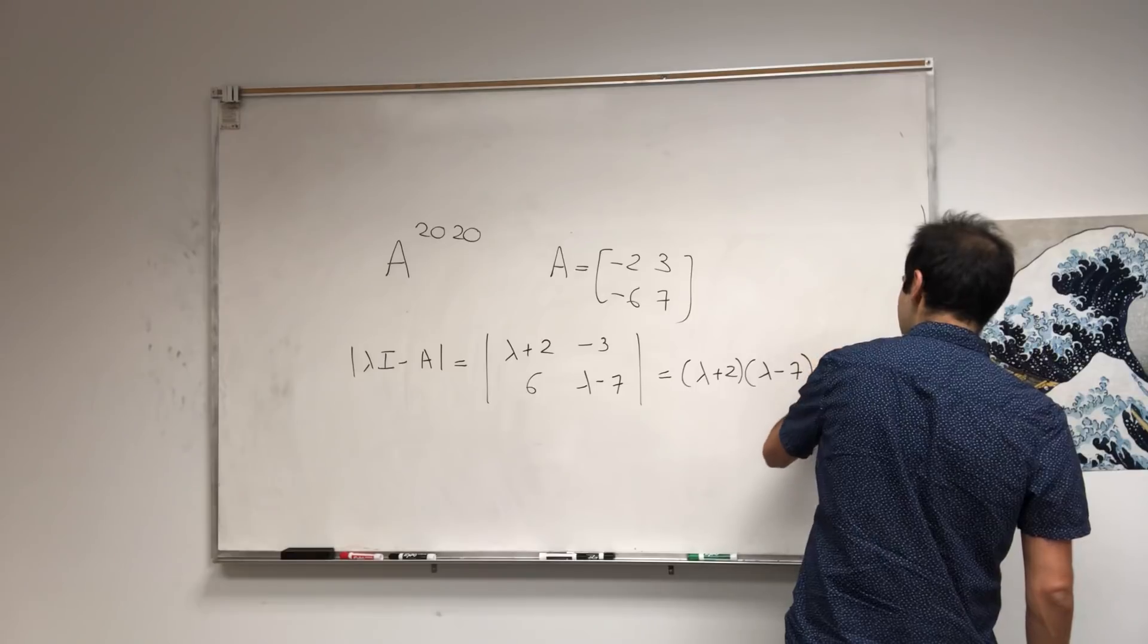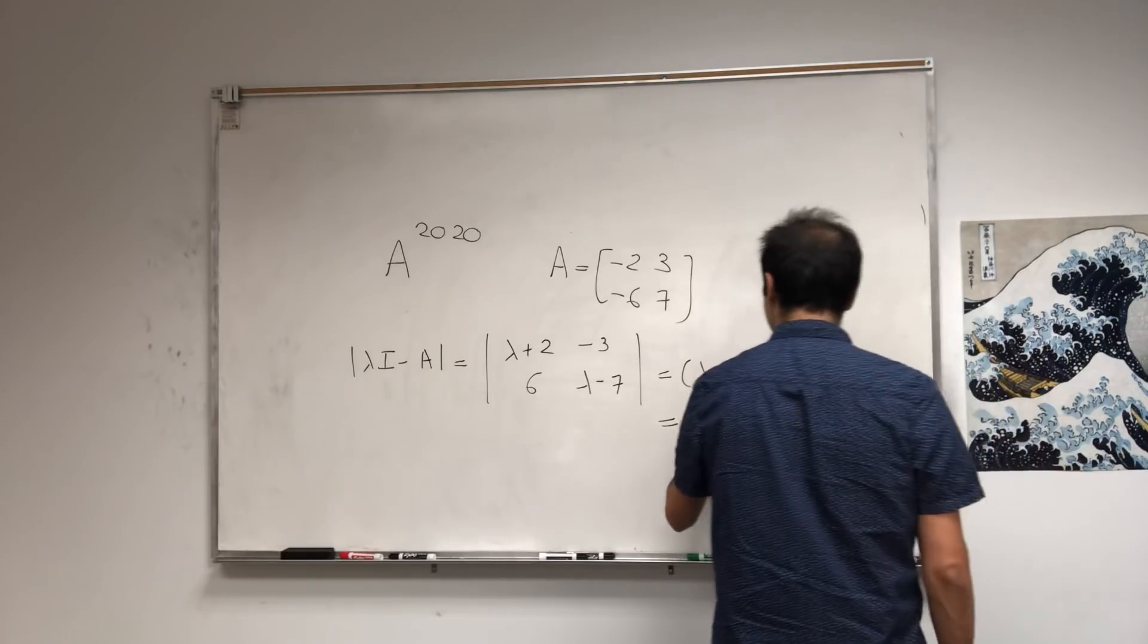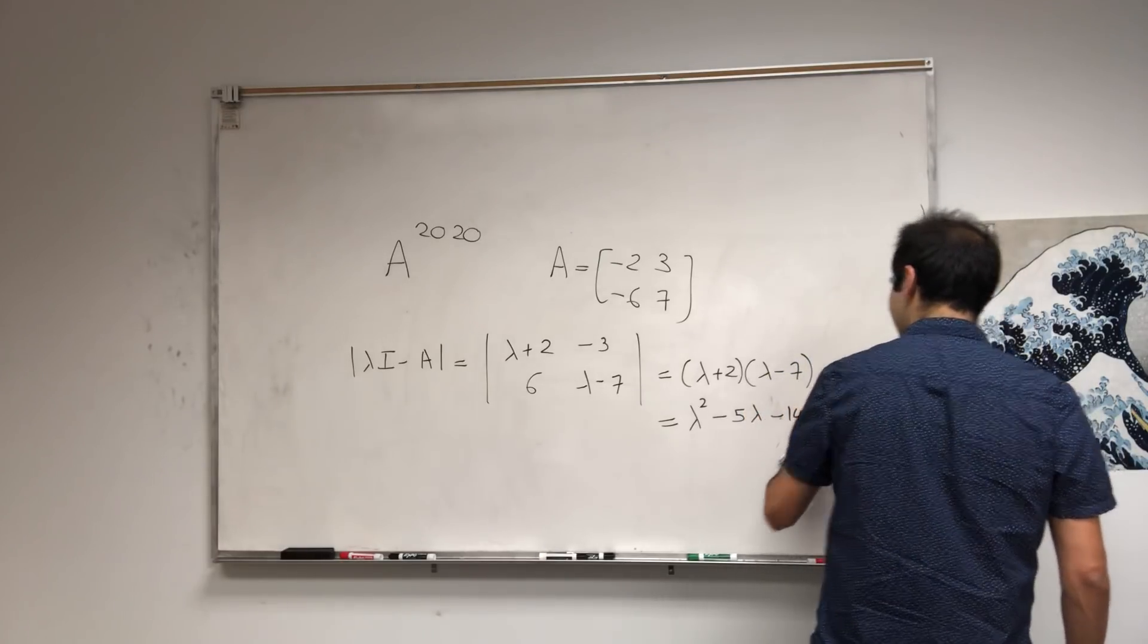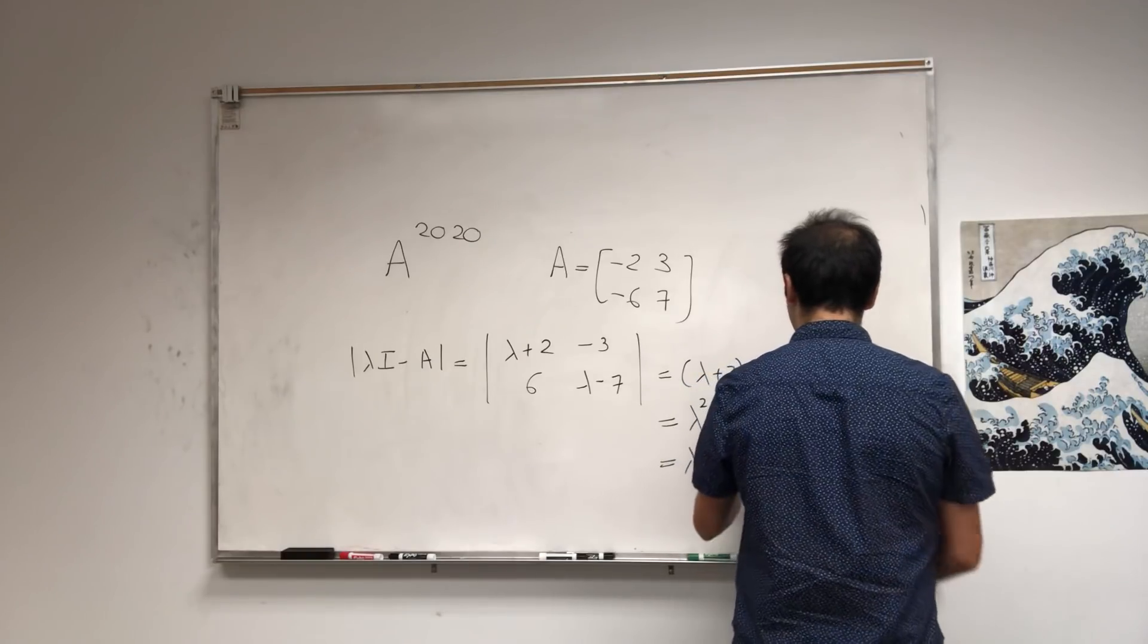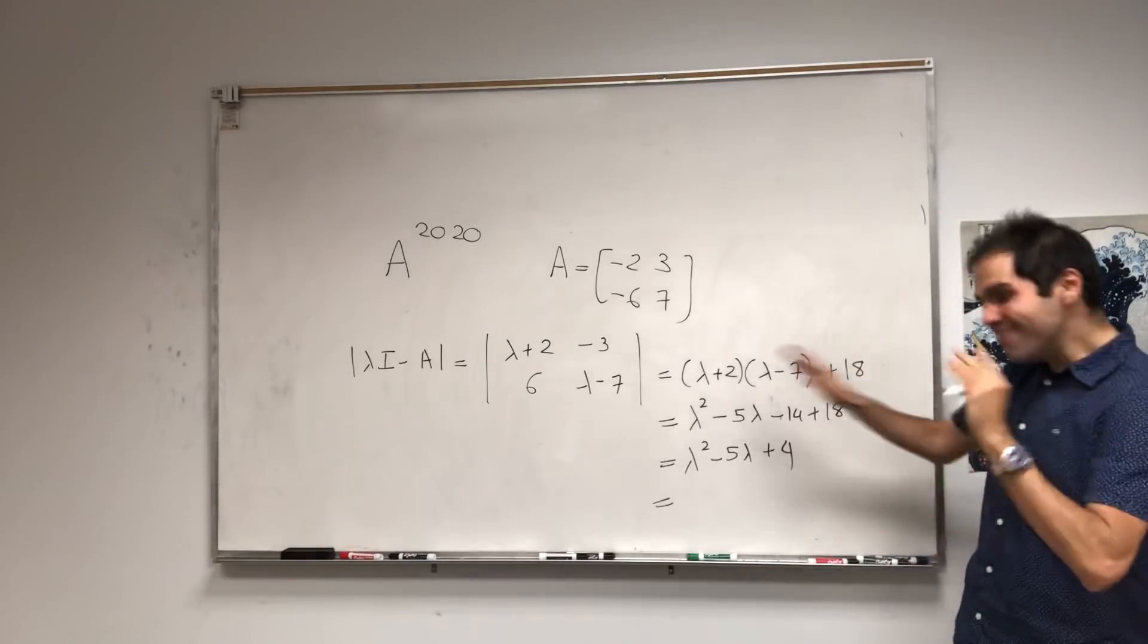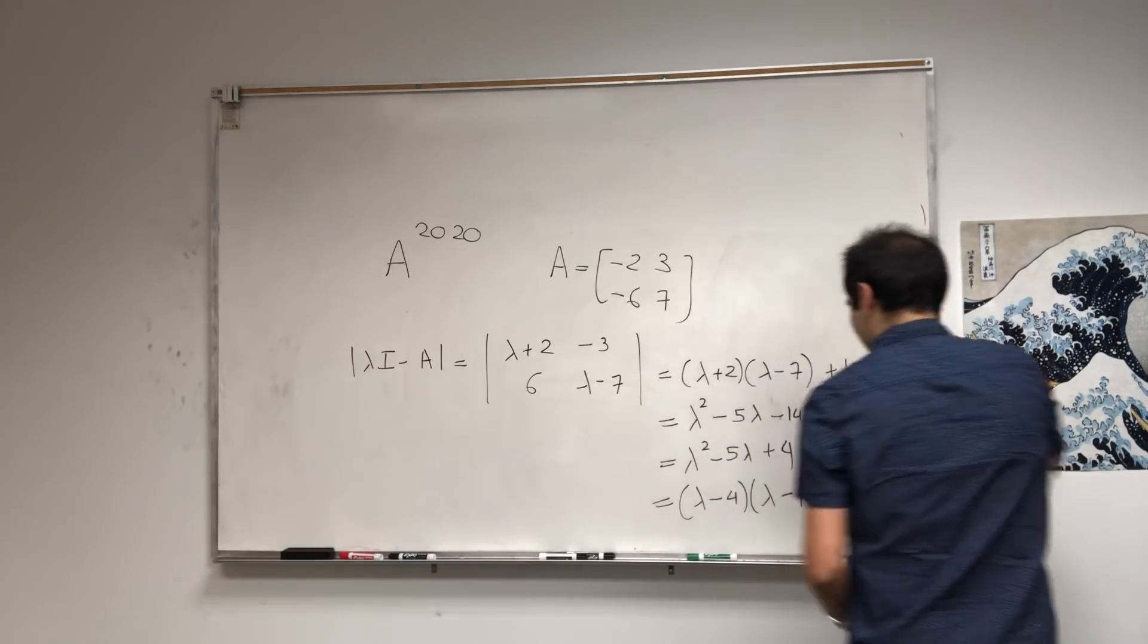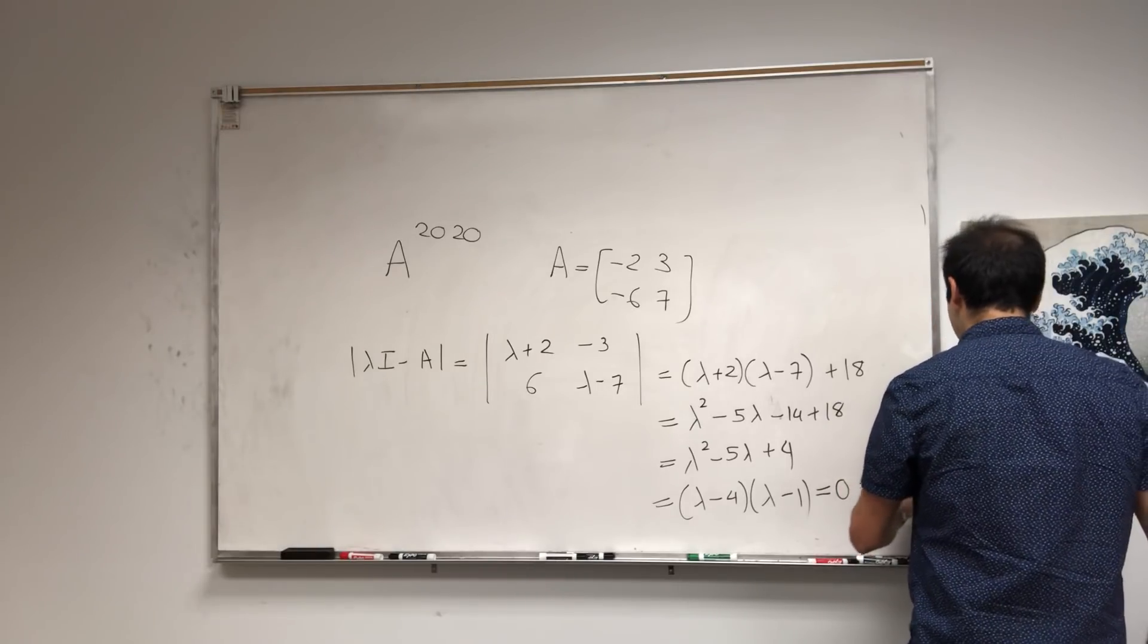And that becomes λ² - 5λ + 4. In linear algebra they're amazing at factoring, so (λ-4)(λ-1). Set that equal to 0, and you get λ = 1 and 4.